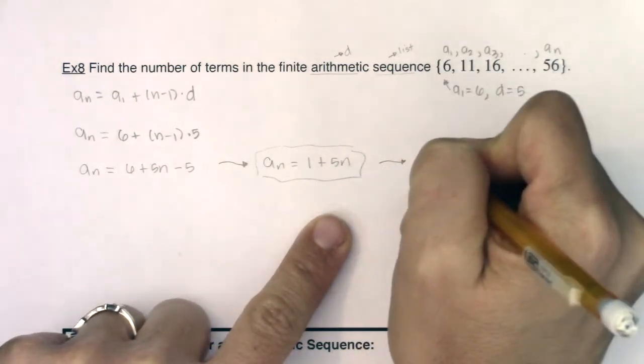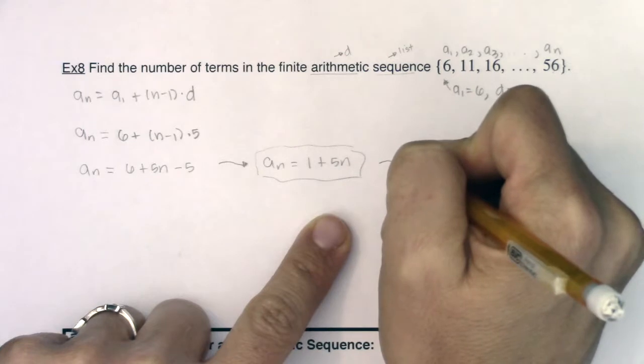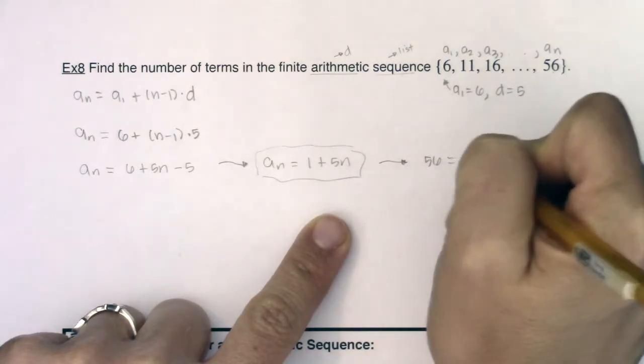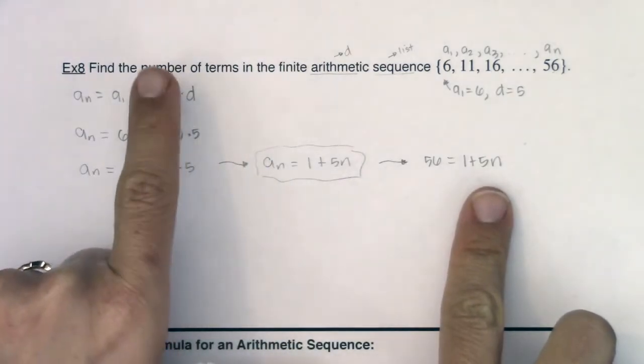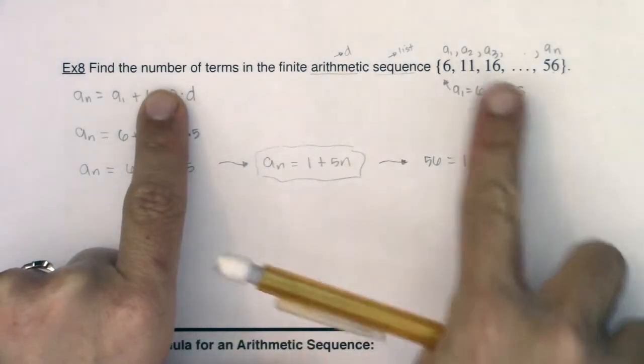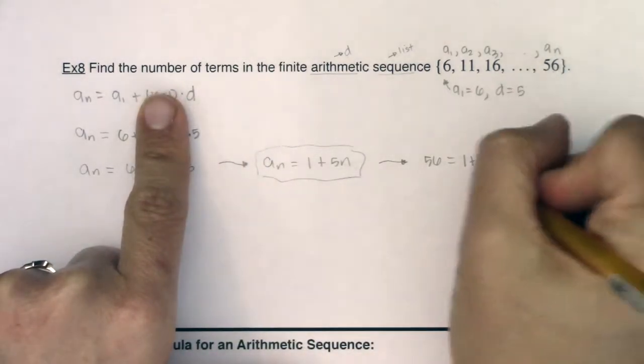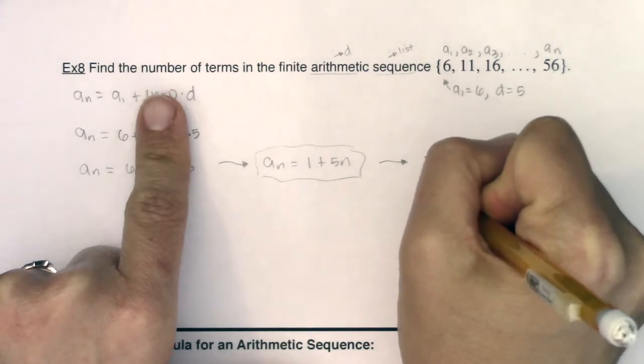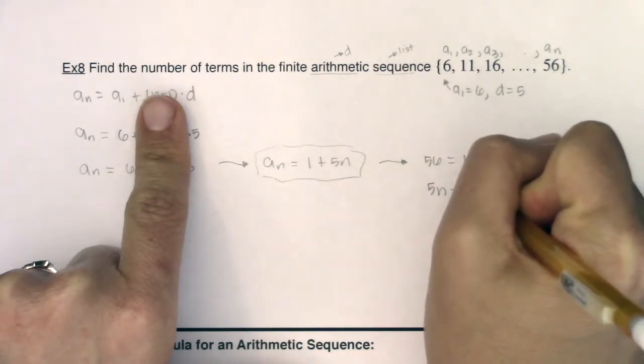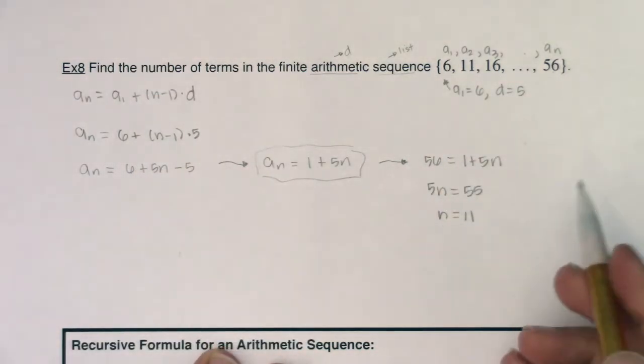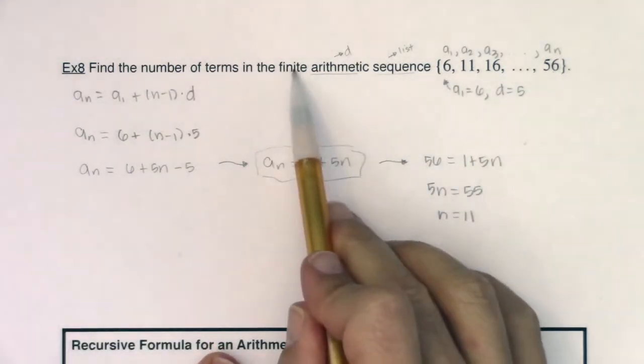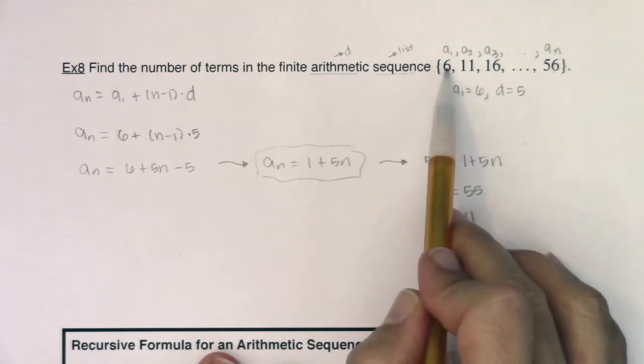And then I can start to find the number of terms in this finite sequence. If I subtract the 1, you can see that 5n is going to be equal to 55, and that's going to get me n is equal to 11. Or another way of saying this is I have a finite sequence starting at 6, adding 5 each time, I stop at 56, and this is a sub 11.